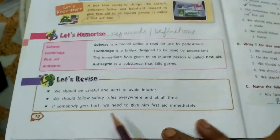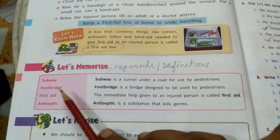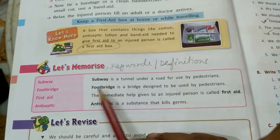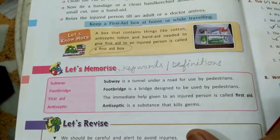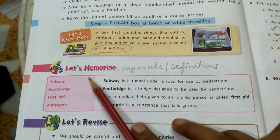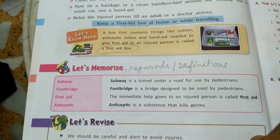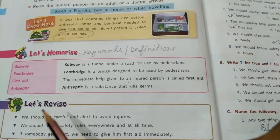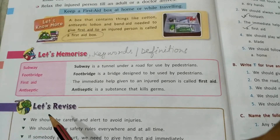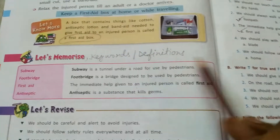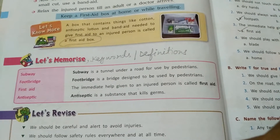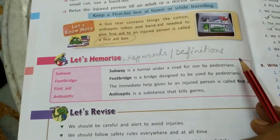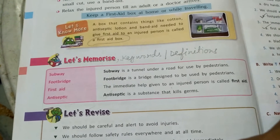Coming to page number 18, there are the keywords. You also have to write these keywords in your science fair notebook when you start the written work for this chapter. First write the keywords with proper date and day, then complete them. Keywords plus question answers will be done in the science fair notebook, while book exercises will be done in the book itself with pencil only, in neat and clean handwriting.